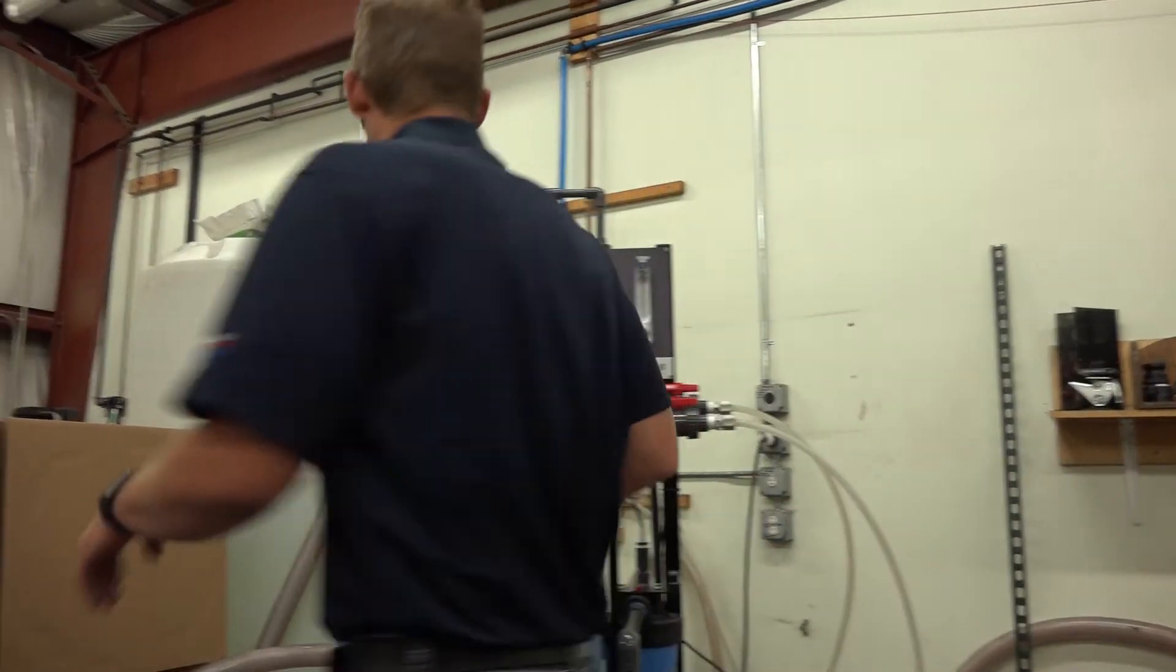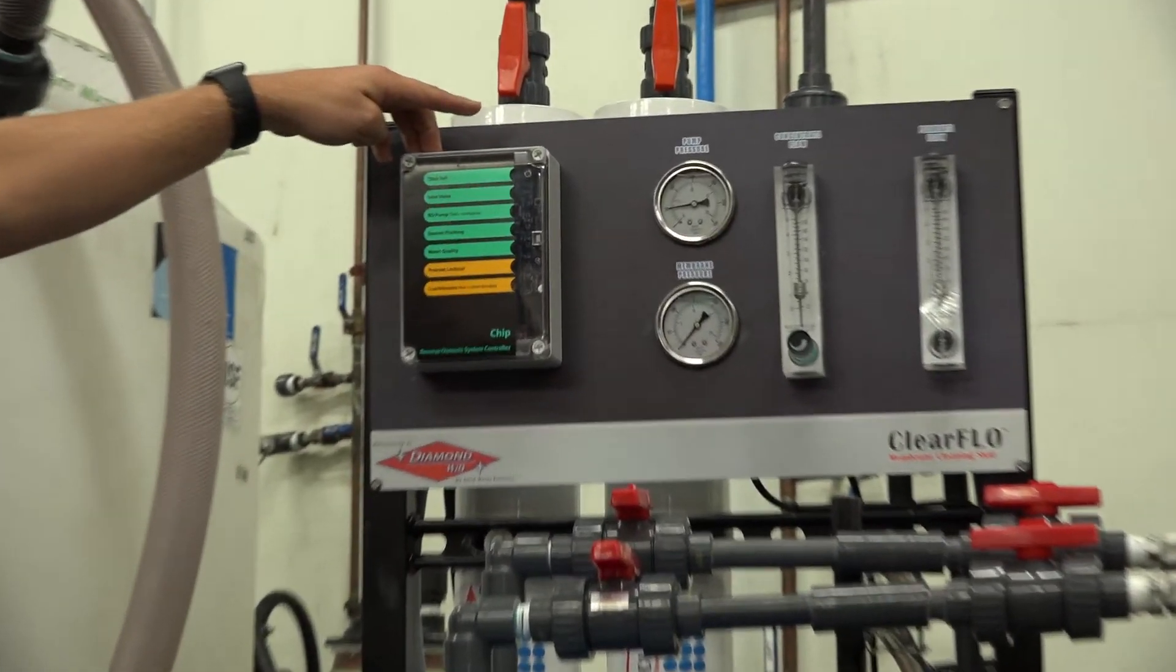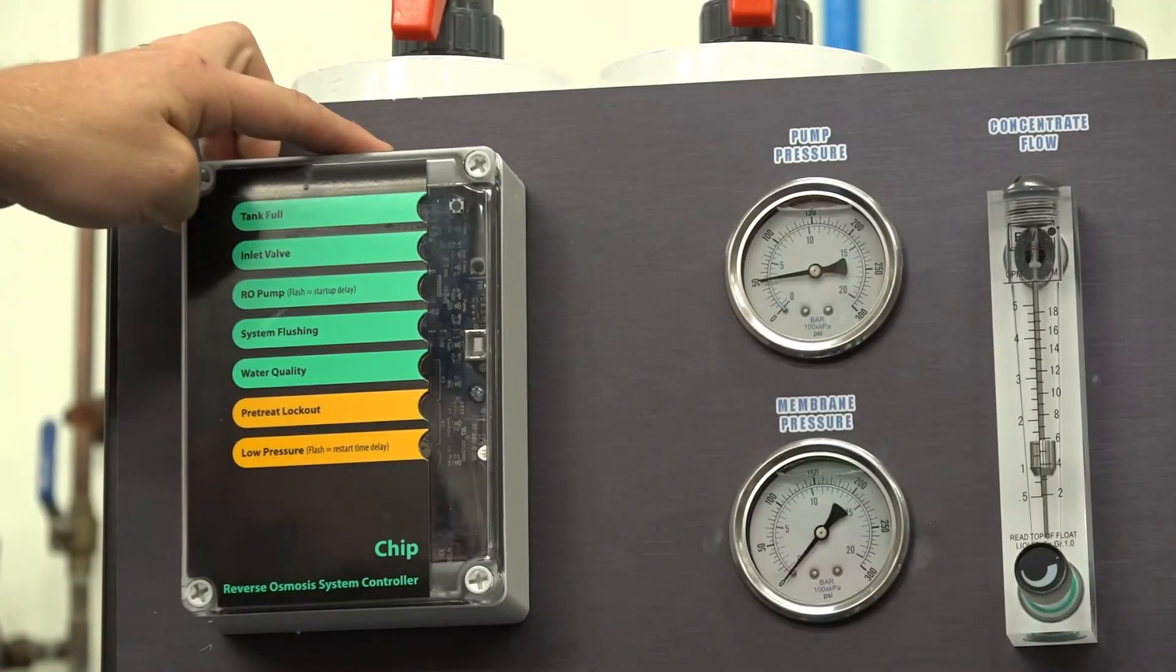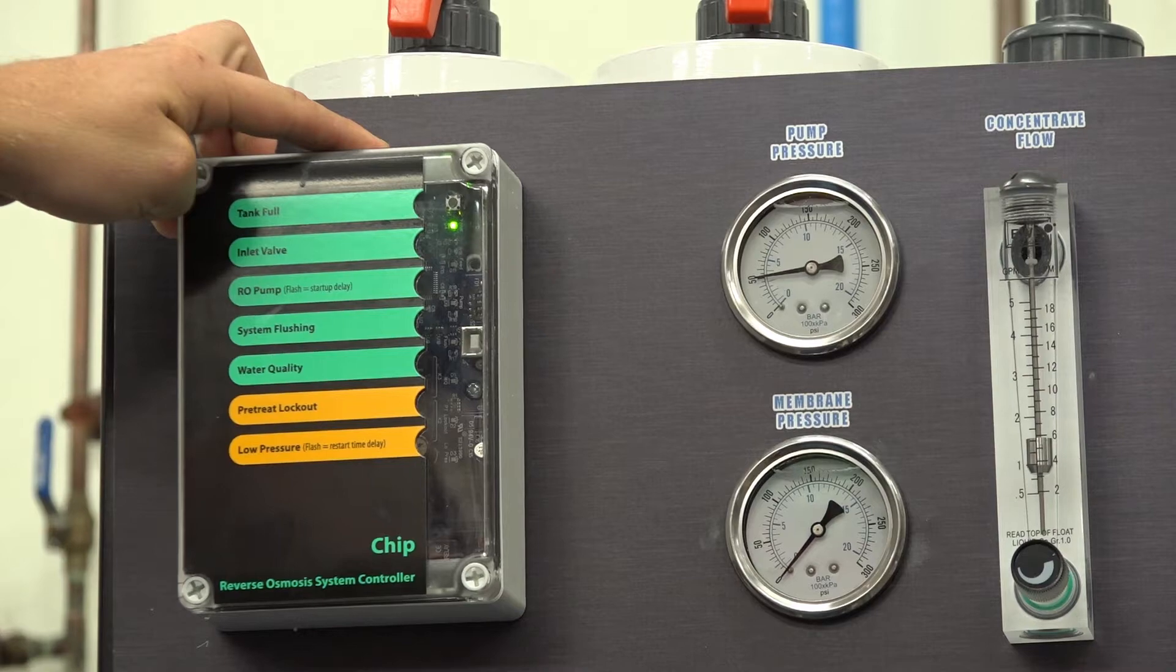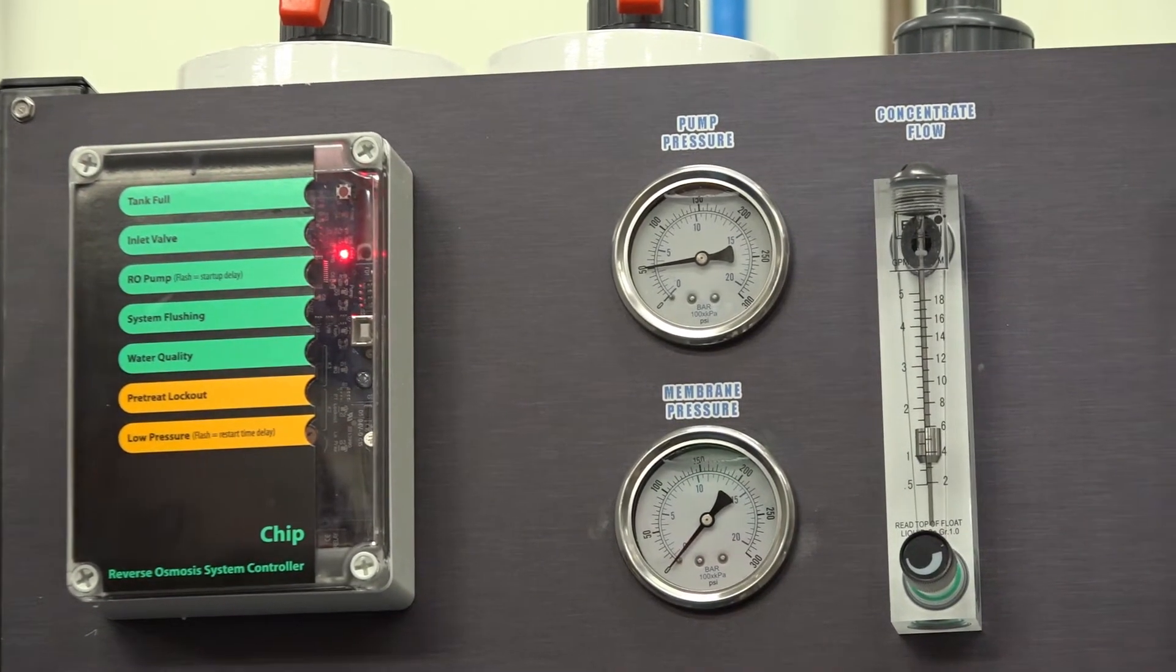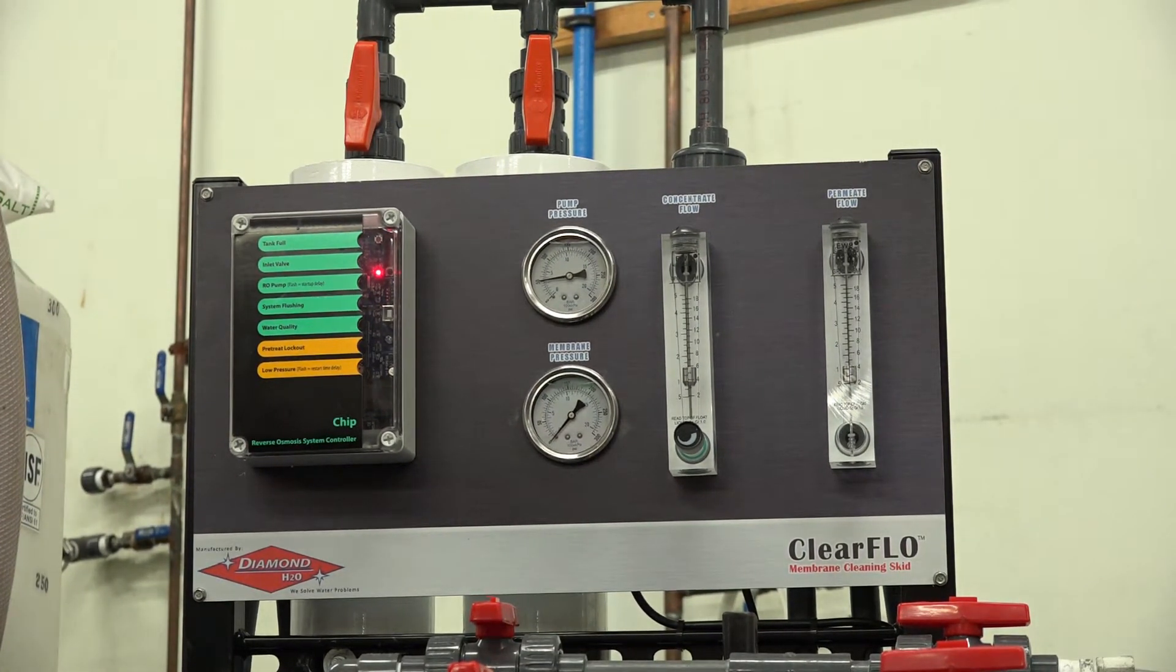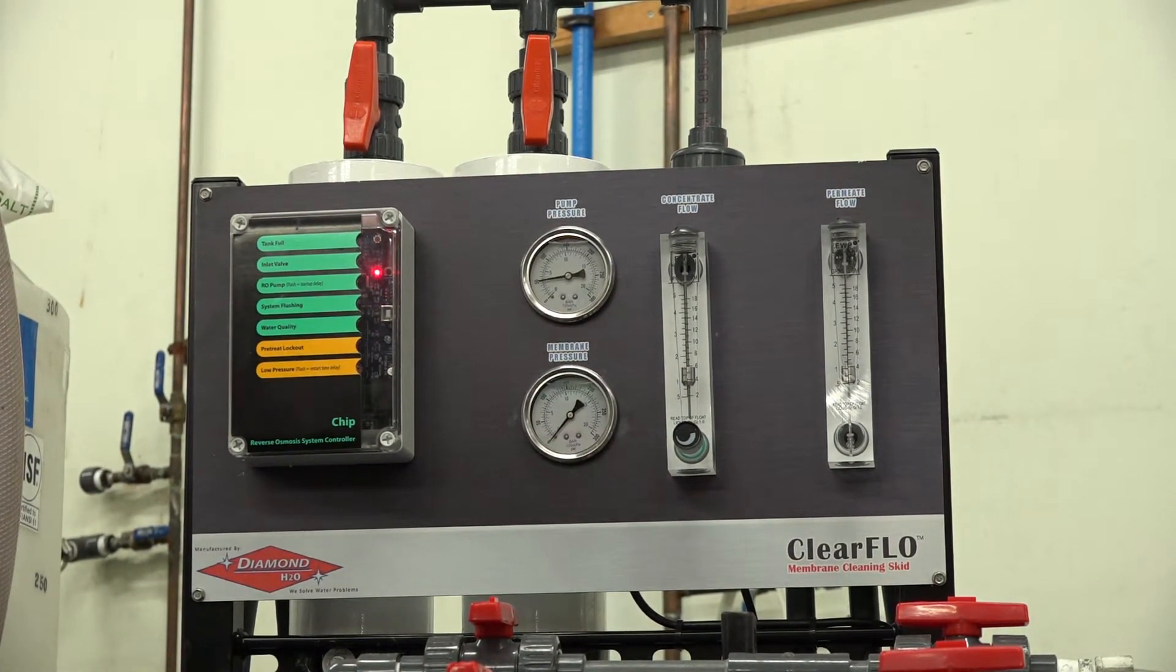Once you have water flowing, you can go ahead and turn on your RO system. It's a sensor switch. All you have to do is press and hold your finger on top. Red light will come on. It will start a ten second delay. And then your pump will then turn on.